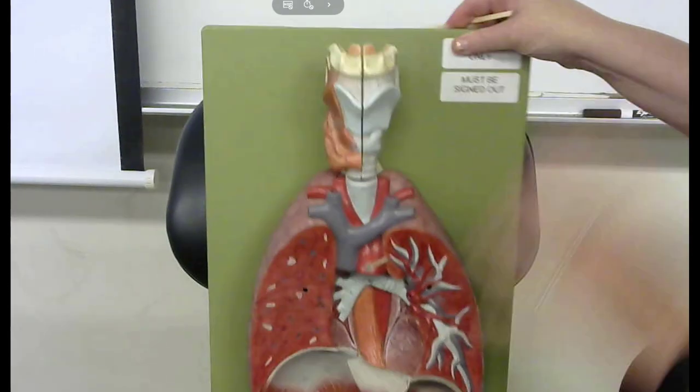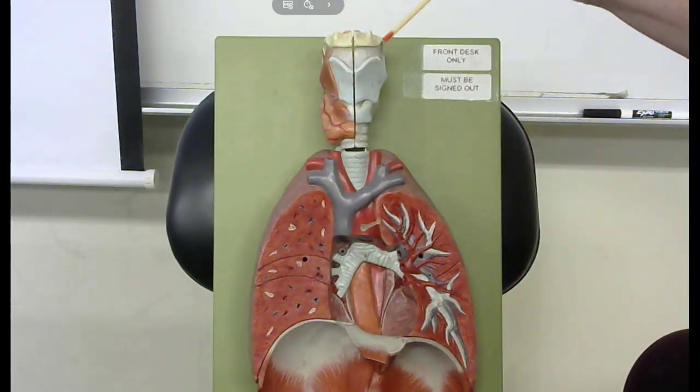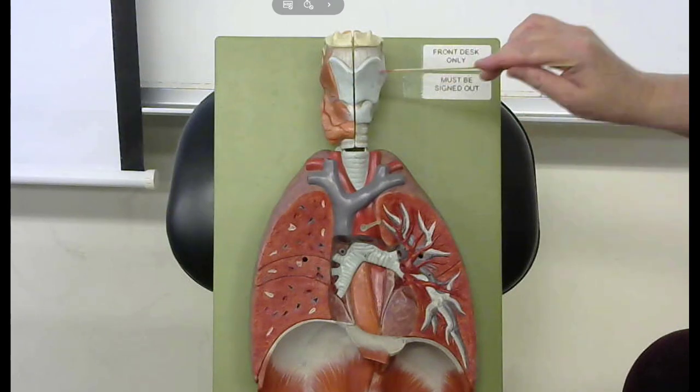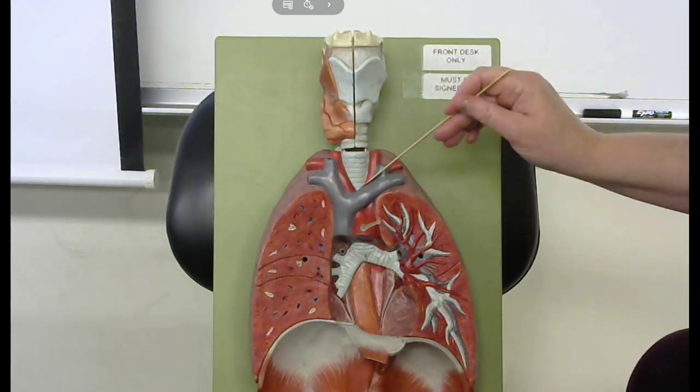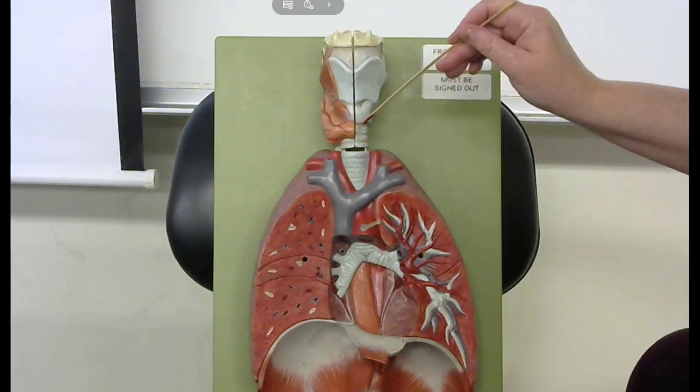So once I remove the heart, I'm able to see more of these structures. This is the epiglottis, the hyoid bone, larynx, the thyroid cartilage, thyroid gland, cricoid cartilage, cartilaginous rings of the trachea.